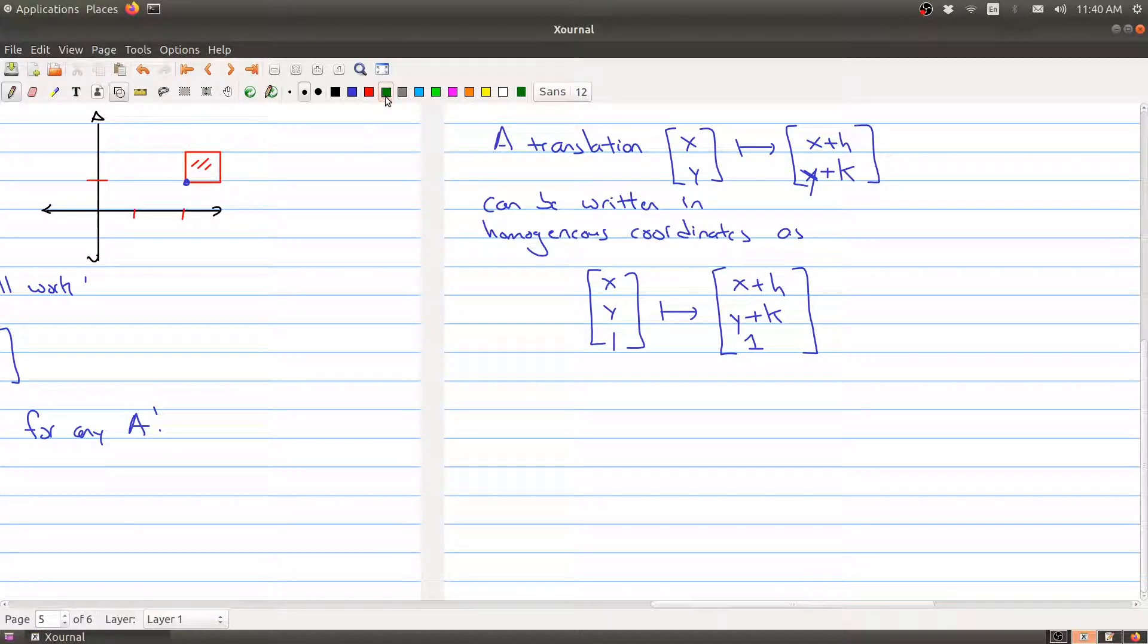Okay, so let me just put it in matrix form. Here we have the matrix form of the translation. It's given by the matrix [1 0 h; 0 1 k; 0 0 1] multiplied by the particular point (x,y,1), and this gets sent to (x+h, y+k, 1). So we can represent a translation as a matrix transformation.